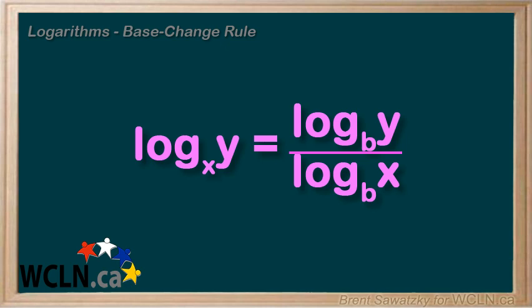Our base change rule can be summarized as: log base x of y equals log base b of y over log base b of x. This is nothing different than before, other than we would consider that base b to be 10 so that it went right into our calculator. But we will find it useful going forward to be able to convert to other bases, not just 10.